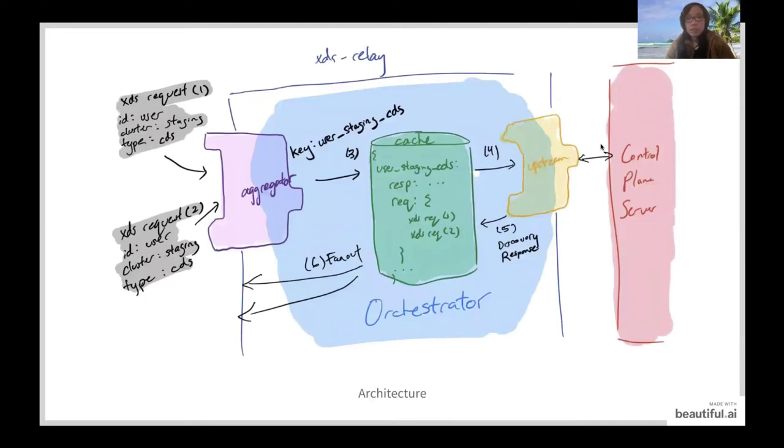We thought that it would be easiest to understand the architecture of XDS-Relay by going through a workflow diagram. So, on this slide, you can see the workflows numbered 1 all the way to 6. When discovery requests first make their way into XDS-Relay, they go through an aggregator component. This is the component that takes the rules we mentioned in the previous slide and translates these requests into unique discovery keys. So, in this example, we've chosen to map both requests to the same key using a combination of the node ID, the cluster, and the request type.